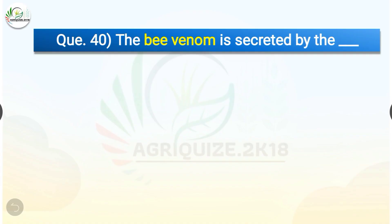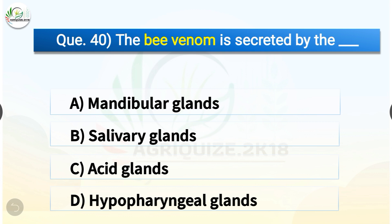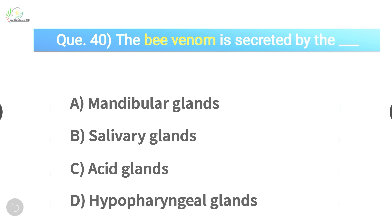Question number forty: The bee venom is secreted by which gland? The options are: mandibular glands, salivary glands, acid glands, or hypopharyngeal glands. The correct answer is option C — acid glands. The bee venom is secreted by the acid glands.